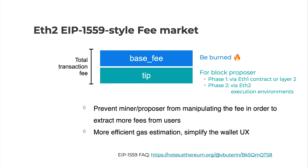This EIP could fix some important issues with the current fee market economics. It makes most transactions settle at the same fee rate, so in the normal case users only need to decide if they want to pay or not. It can help mitigate the situation where miners might manipulate the fee to extract more fees from users. It's also a more efficient gas estimation approach than the current first-price auction in ETH1.